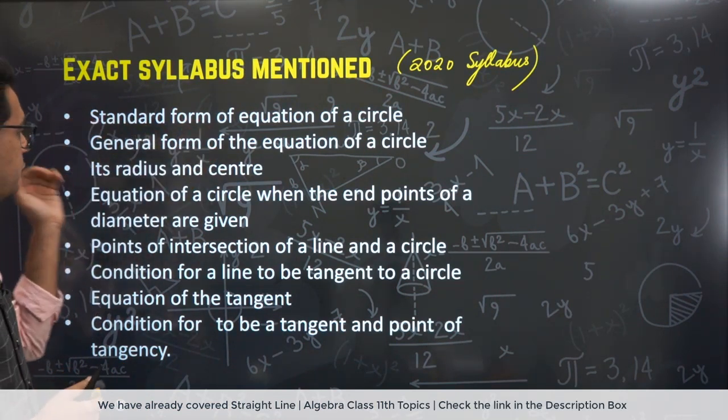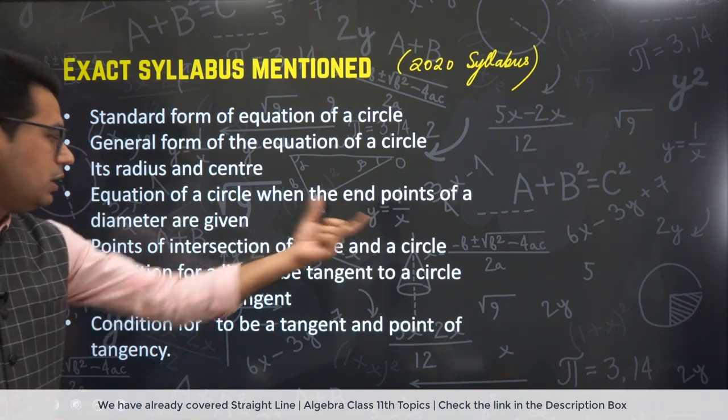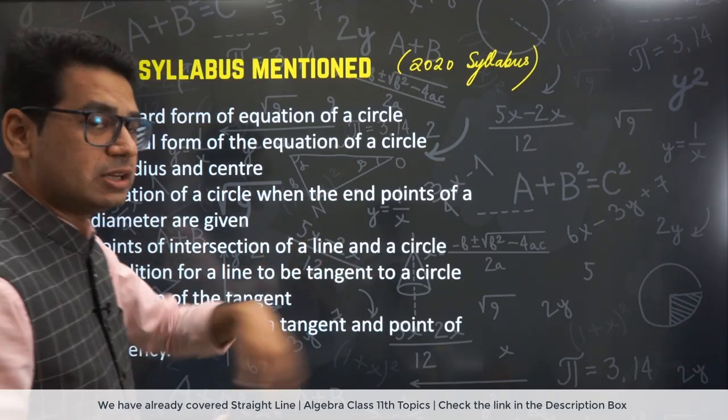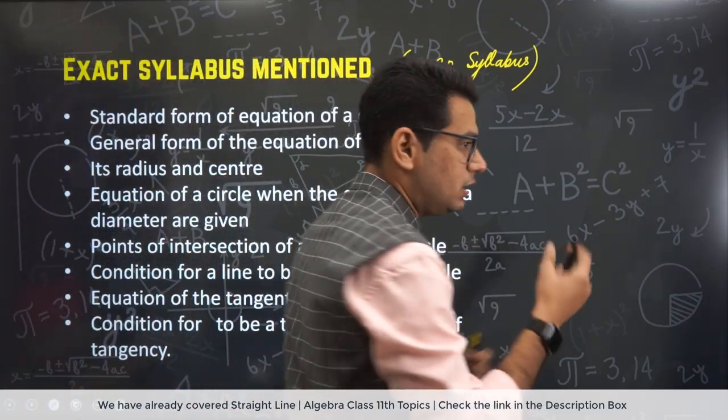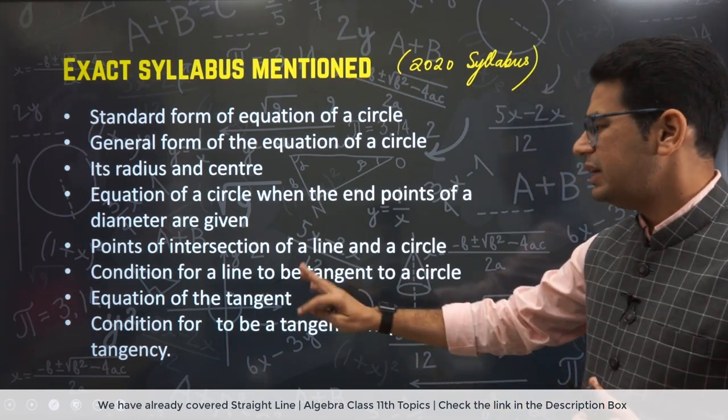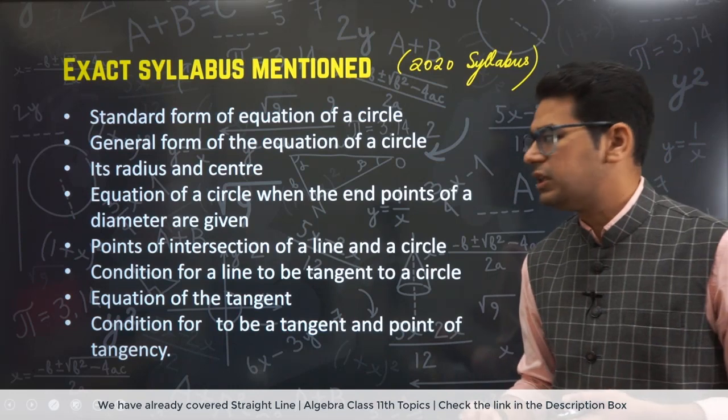Standard form of equation of a circle. General form. Radius and its center. Equation of circle when the endpoints of diameter are given. That means diametric form. Then you were given points of intersection of a line and a circle. Line may be secant, tangent. For not touching, condition of tangency. And then condition of tangent and point of tangency. These were the things which were given.